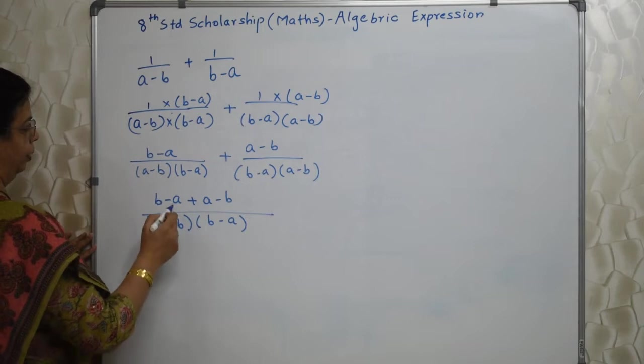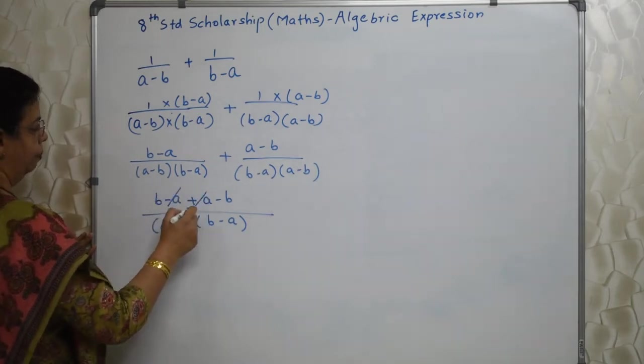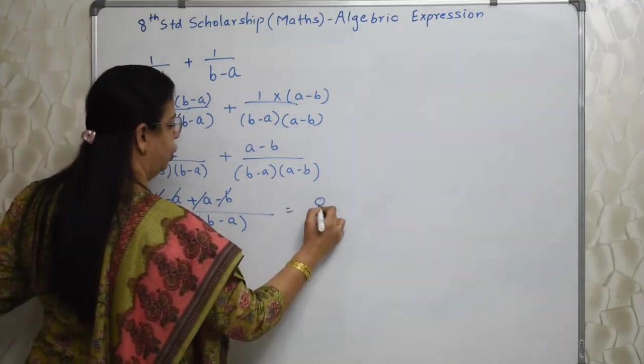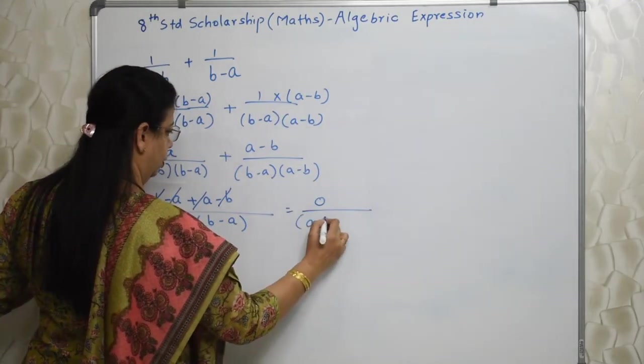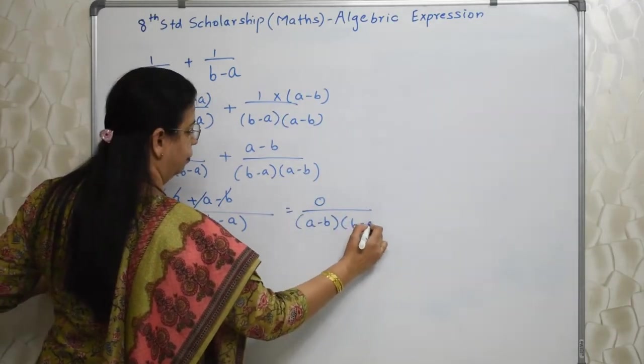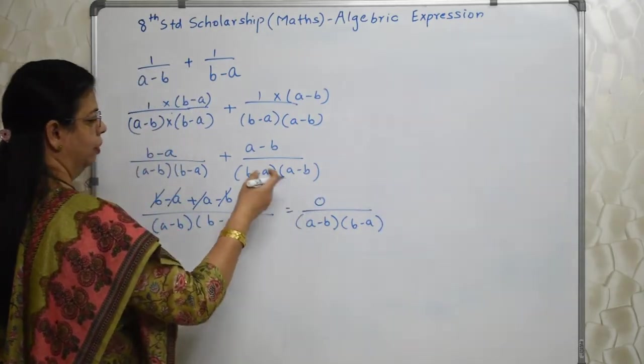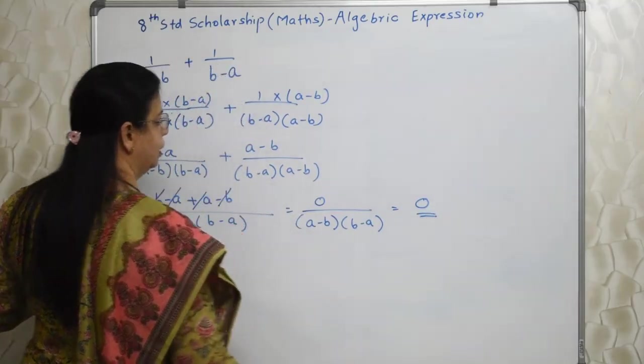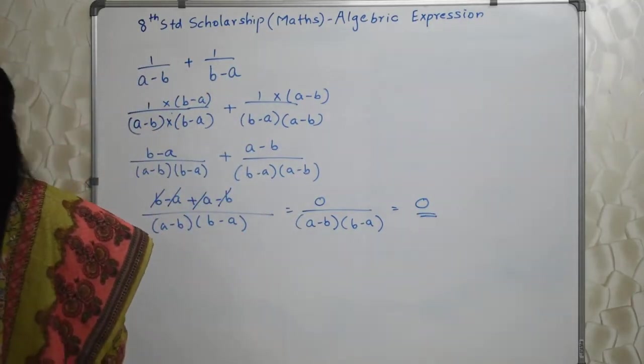Now observe the numerator. A minus A plus A. Plus B minus B. So we have 0 here. And in denominator we have this. Whatever is in the denominator. Since the numerator is 0, the value is 0. So our answer is 0. Very, very interesting.